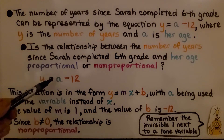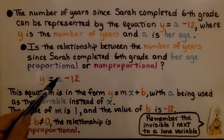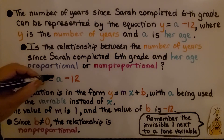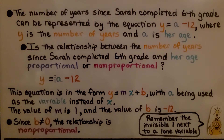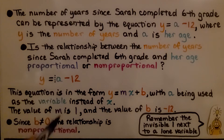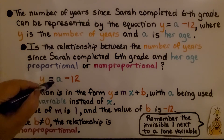Our equation is y equals a minus 12. This equation is in the form y equals mx plus b, with a being used as the variable instead of x. The value of m, the slope, is 1 — there's an invisible 1 in front of the lone variable — and the value of b is negative 12. Since b is not equal to zero, the relationship is nonproportional. When you see a lone variable, there's actually a 1 there.